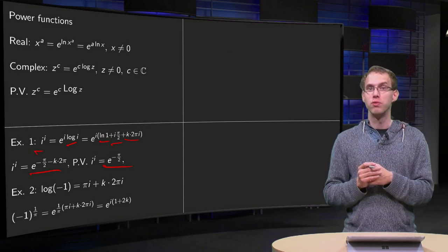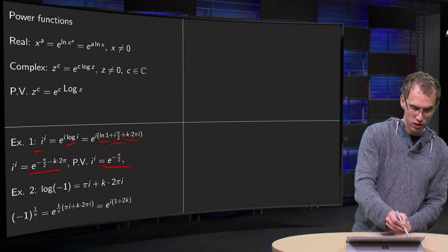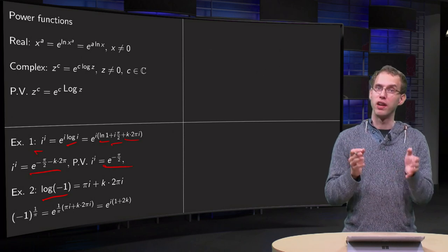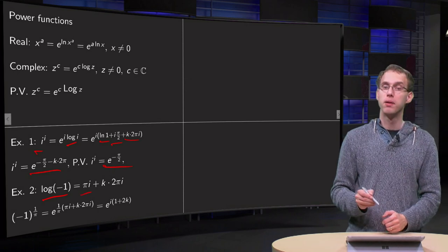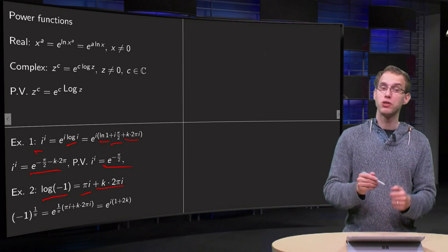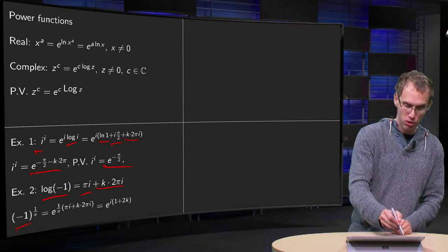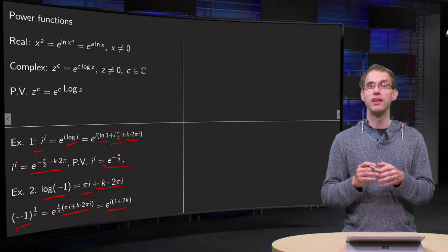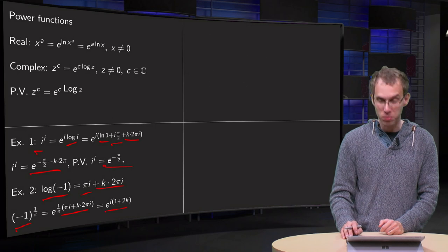We can also compute a number like minus 1 to the power 1 over π. In order to do so we need the log of minus 1 first. The log of minus 1 equals the ln of the modulus of minus 1 — so ln of 1 equals zero — plus i times the argument, which equals π plus k times 2π. That allows us to compute minus 1 to the power 1 over π equals e to the power 1 over π times this log, which simplifies to e to the power i times (1 plus 2k). So minus 1 to the power 1 over π looks quite odd — it's some complex number.